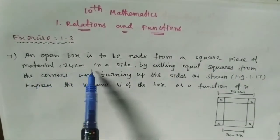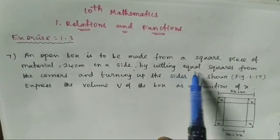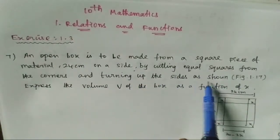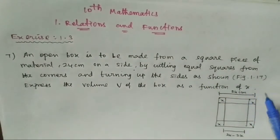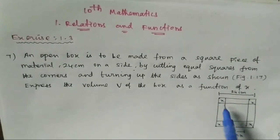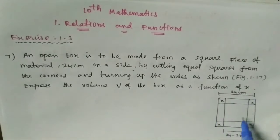An open box is to be made from a square piece of material 24 cm on a side by cutting equal squares from the corners and turning up the sides as shown. Figure 1.17: Express the volume of the box as a function of x.